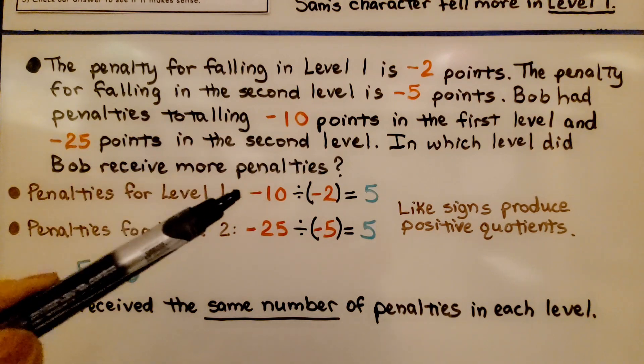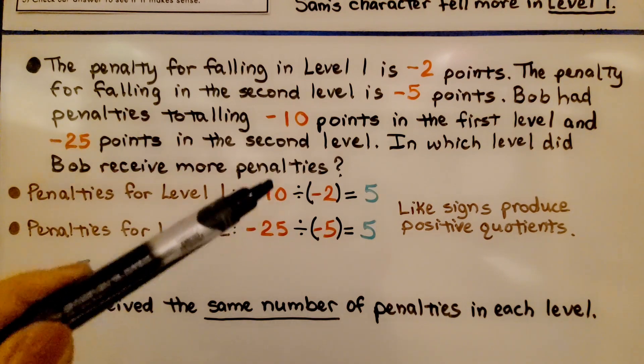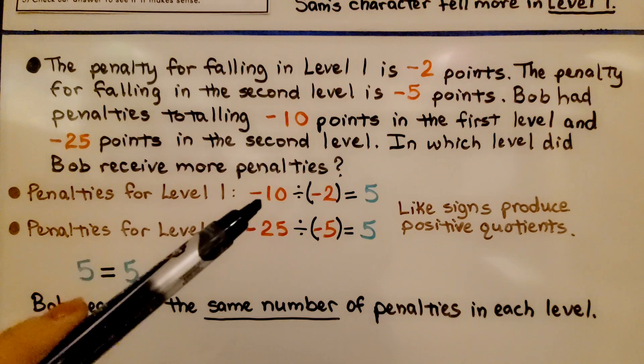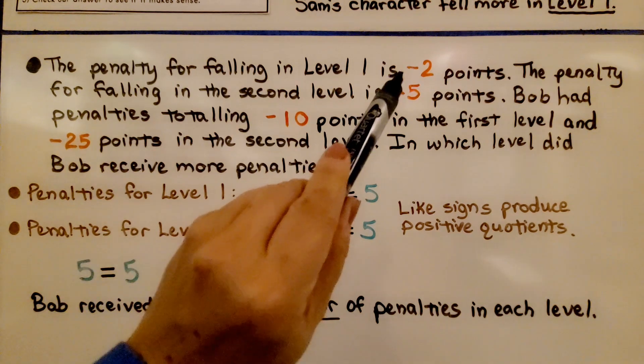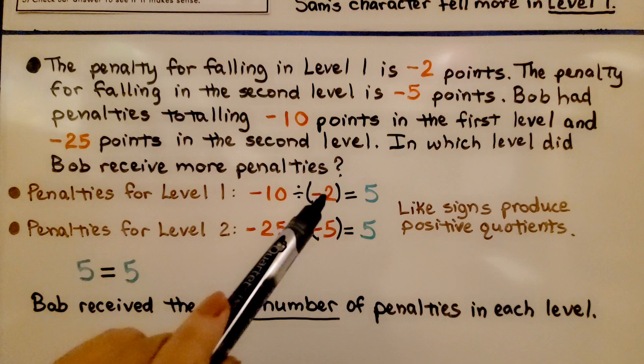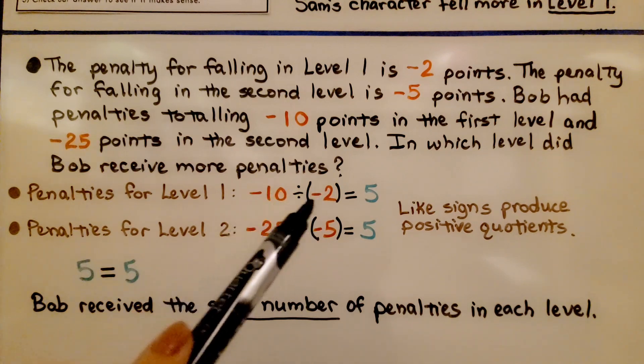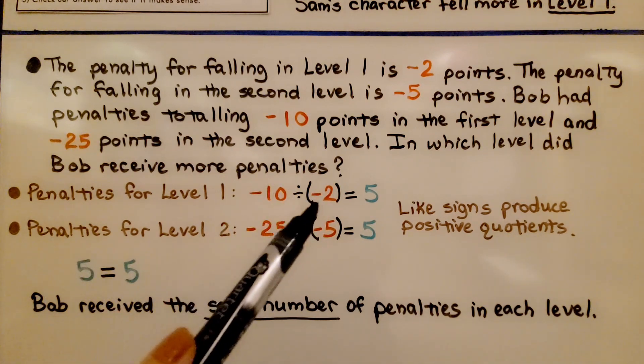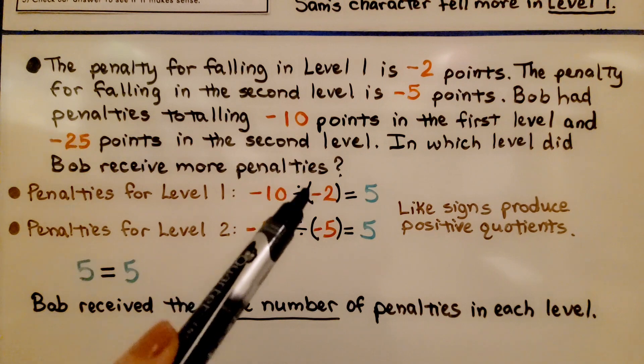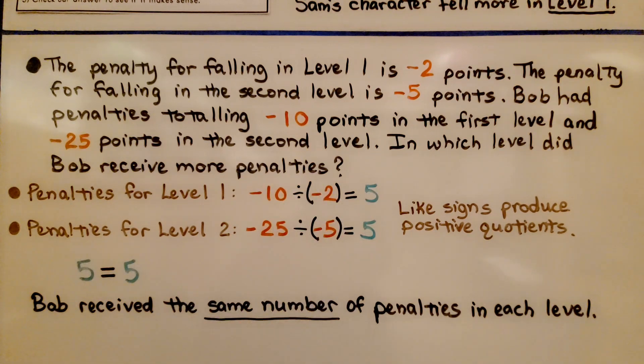We can do the negative 10 for the first level that he got and divide it by the negative 2 points that he loses for the first level. We have like signs. They're going to produce a positive quotient. And 10 divided by 2 is 5. We have a positive 5.